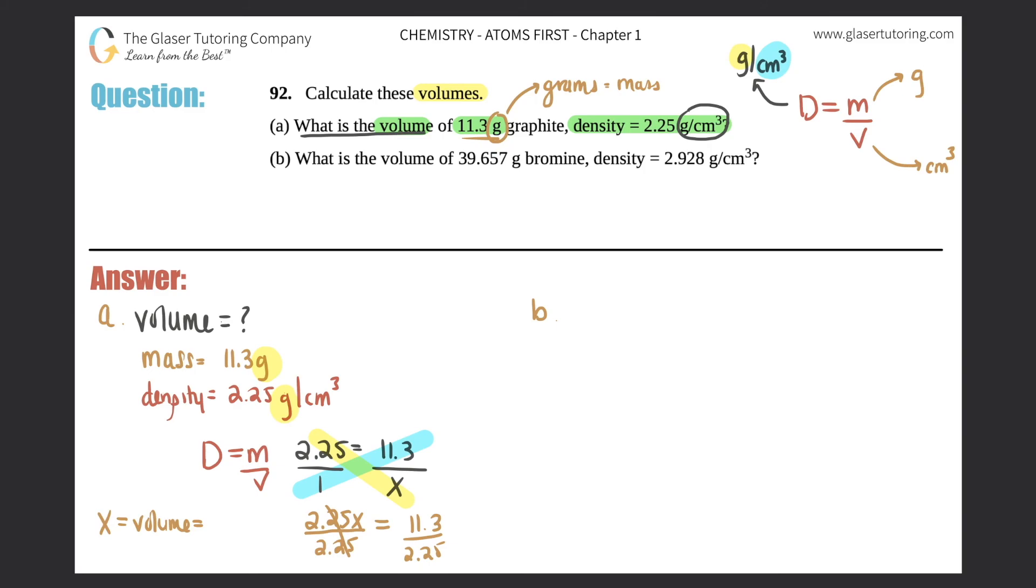So it turns into 2.25 times x equals 11.3. Get your x by itself - divide by 2.25. That cancels this out, and x, which is the volume, before we even plug into the calculator, we should figure out sig figs. Three sig figs here and three sig figs in this one, so my answer should have three sig figs. When I plug in 11.3 divided by 2.25, I get 5.02, and that's three sig figs.